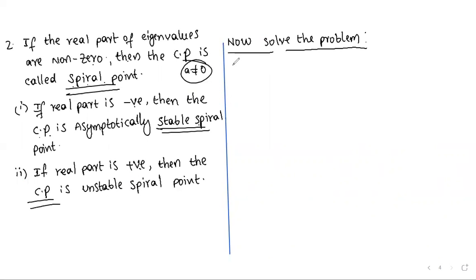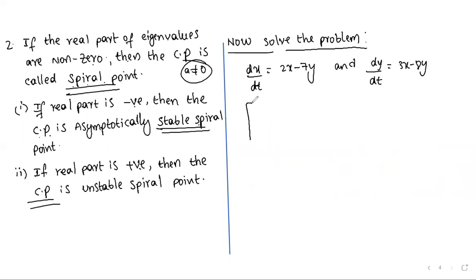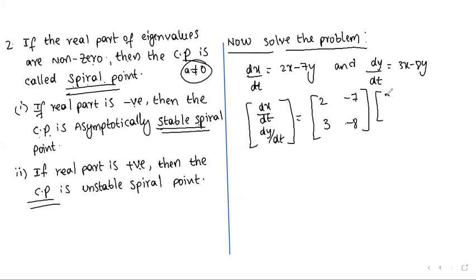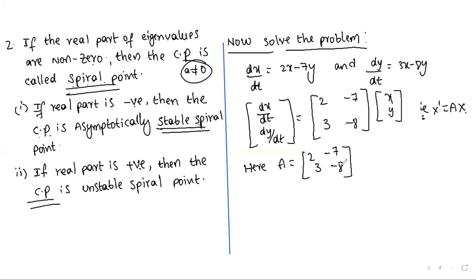Now we solve the given problem. The matrix form of the given system dx/dt = 2x - 7y and dy/dt = 3x - 8y is written as [dx/dt, dy/dt] = [[2, -7], [3, -8]] · [x, y]. So here A = [[2, -7], [3, -8]].